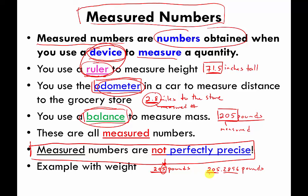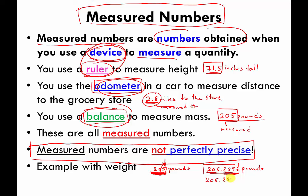So the scale says you weigh about 205 pounds — and that's not a perfectly precise measurement. You might say, well, if you get a fancier scale that can measure down to four decimal places, then it's perfectly precise because it will tell you that you weigh 205.2896. But even then, that scale is probably not perfectly precise, because maybe I actually weigh 205.289611734 pounds. No scale, no matter how sophisticated, is going to be able to tell you as precisely as possible how much you weigh.